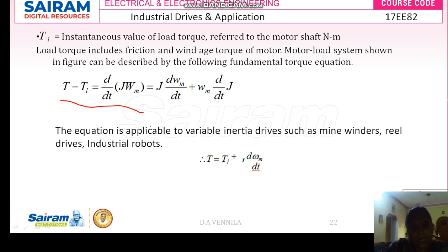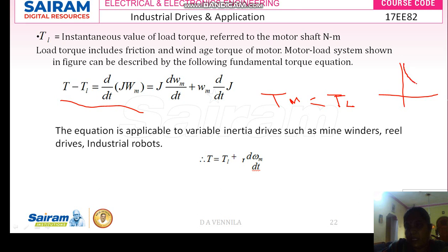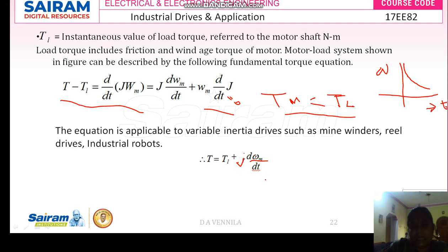With this basic equation we are going to discuss the dynamics of the motor load system. When the electrical drive reaches equilibrium state, that means Tm equals TL. When equilibrium is achieved, as time increases your speed decreases, motor torque equals load torque. This term becomes very negligible — equal to zero. So you will have only T = TL + J·(dωM/dt). This simplified equation is applicable for variable inertia drives. Thank you, students.